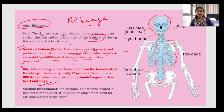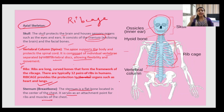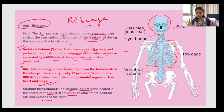The sternum, or breast bone, is a flat bone located in the center of the chest. It serves as an attachment point for the ribs and muscles of the chest. The lungs, rib cage, and sternum are all present in the front. The axial skeleton is composed of the skull, vertebral column, the ribs, and the sternum — where the sternum is just the flat bone where all the ribs adjoin.